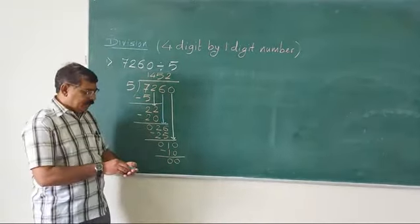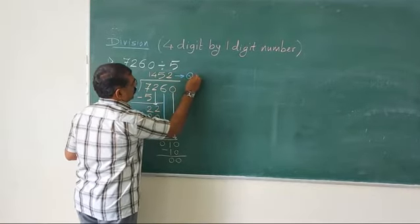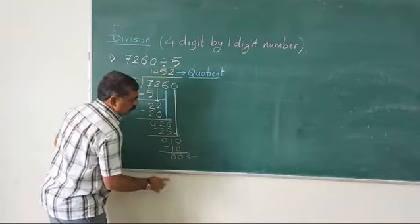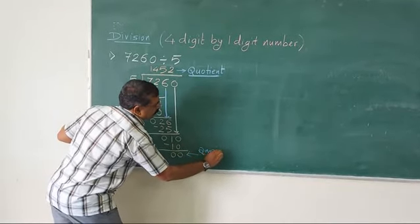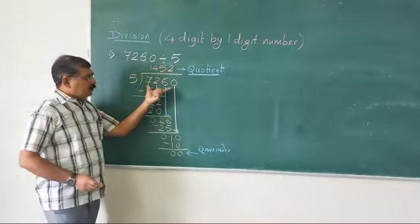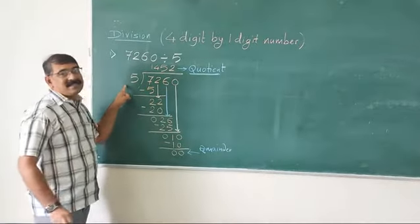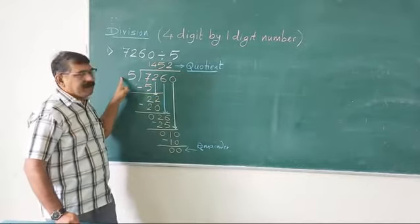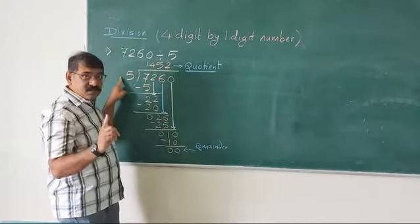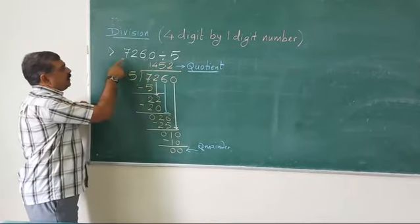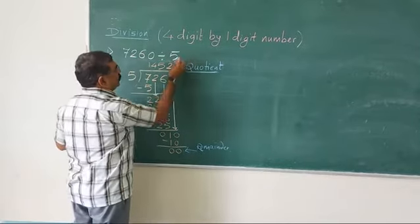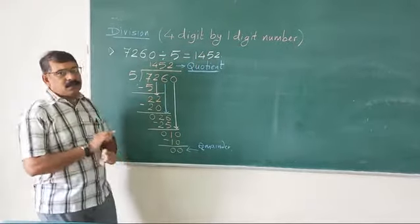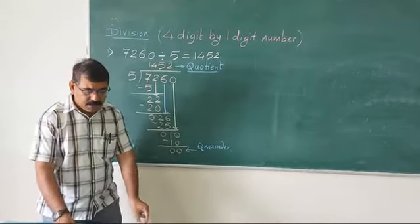Our example is complete. This number is called the quotient. Whereas what is left is called the remainder. 7260 is called the dividend whereas 5 is called the divisor. We have all four parts: quotient, remainder, dividend and divisor. In division the answer is always our quotient. So when we divide 7260 by 5, we get the answer 1452.